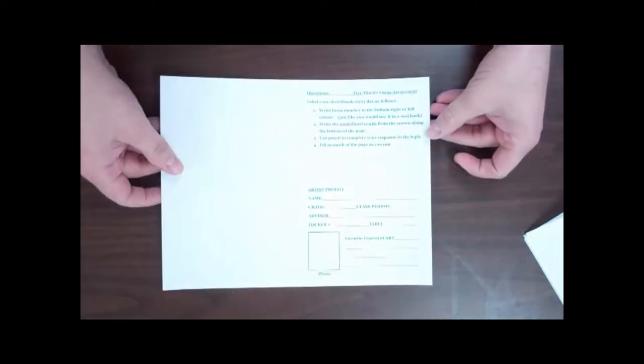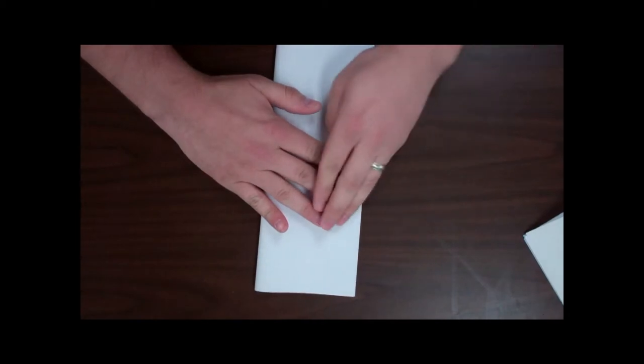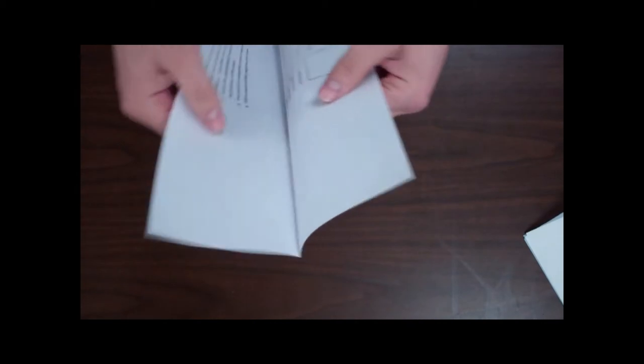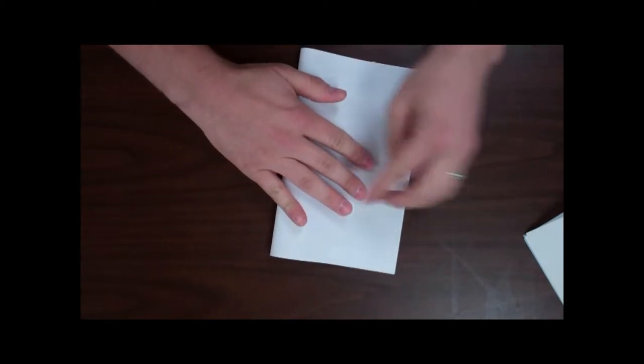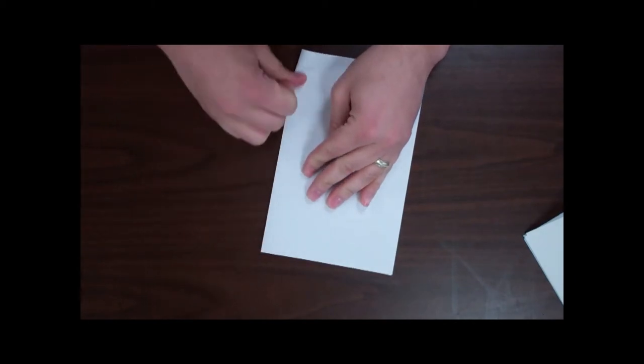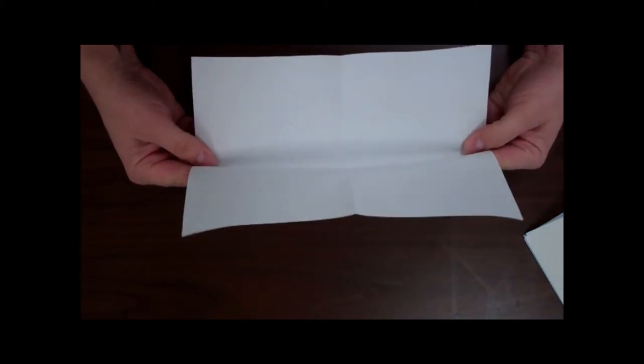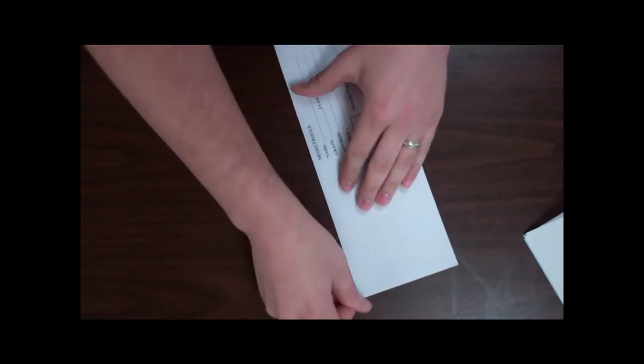If you choose to add the artist profile page and the directions sheet, you simply take it and fold it exactly like the others. Don't forget to reverse the fold that you're going to tear up, making it weaker.